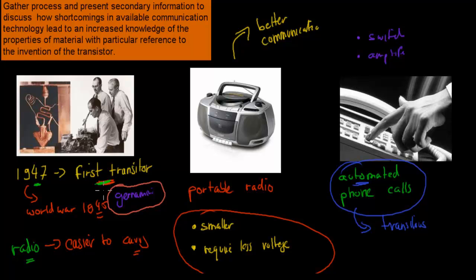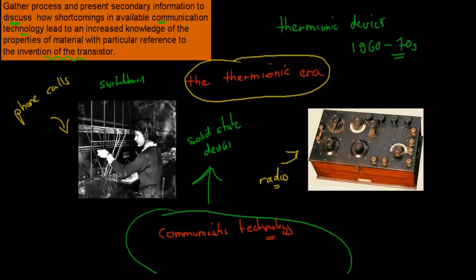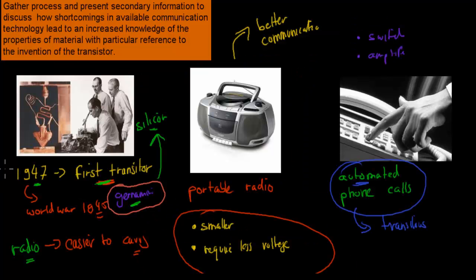First in 1947, then we improved it later on. We managed to get better material for the transistors. We started with germanium but in the 1960s we had silicon because we found a way that we could make that. These technologies allowed us to produce for example portable radios which were much better than the big chunky ones which we had beforehand which would not be transported from place to place, and also made us make these automated phone calls which didn't require a switchboard person.